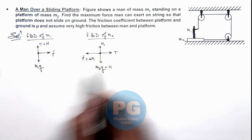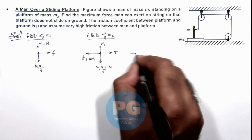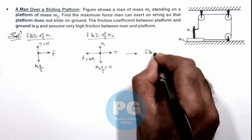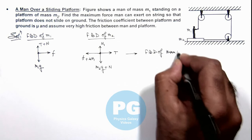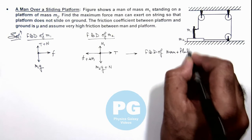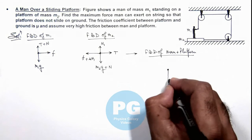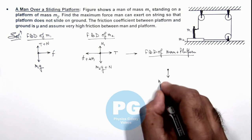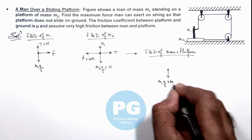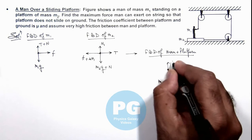If we overlap the two FBDs, the combined system of man plus platform will experience a total weight of m1g + m2g in the downward direction. In the upward direction it is N1 + T.